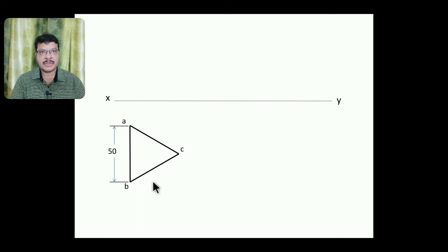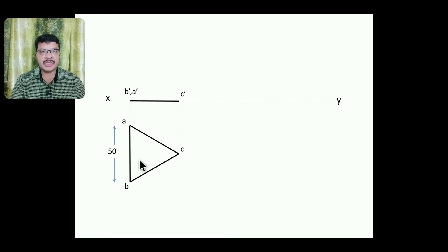Now project the front view like this. This is B', A' when you are looking like this, B next A. That's why B', A' then here we will get C'. This front view is lying on the XY line because this edge is on the HP. And as you are keeping the entire surface parallel to HP, the entire surface will lie on the XY line. That's why the front view will come onto the XY line.